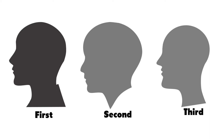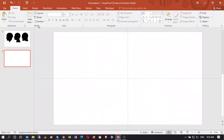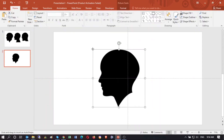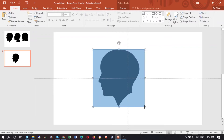For the first approach, open the browser and Google for a human face icon. Now draw a rectangle shape over the image.